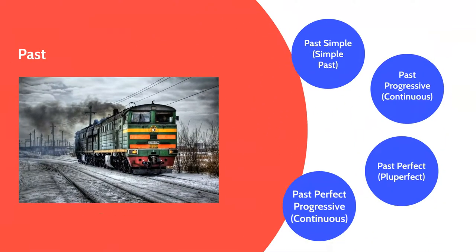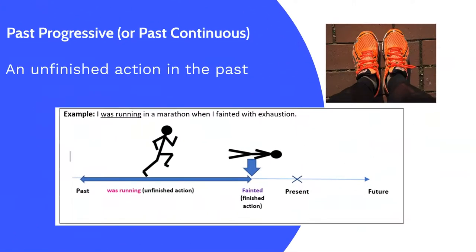Then we have the past progressive, also called the past continuous tense. This shows an unfinished action in the past. For example, I was running in a marathon when I fainted with exhaustion. Was running is the unfinished action, so this is the past progressive tense. It was interrupted when the runner fainted.